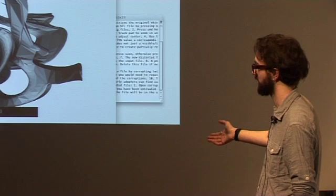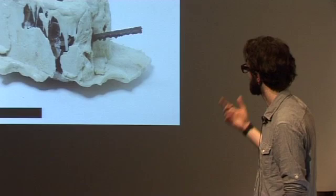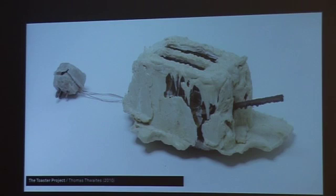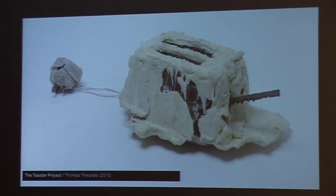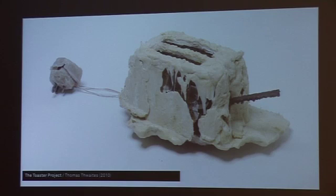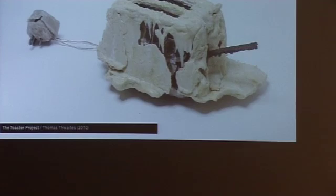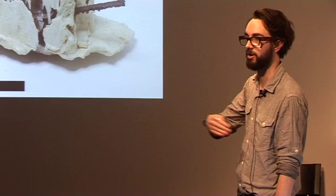Thomas Thwaites' Toaster Project, 2010 — a pretty famous project where he made a toaster. He didn't just get the components; he smelted the metal and made the plastic in a microwave in his garden. Because he went to Argos and a toaster cost eight pounds. He was asking: how much of the manufacturing chain, how much of the value chain is obscured, that this incredible object comes out at one end at eight pounds? This cost him 5,000 pounds and took nine months. And it doesn't even work. But that was the point — there are all sorts of histories and processes and manufacturing techniques and skills and people that go towards this incredibly cheap, incredibly impressive object.